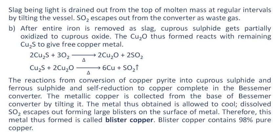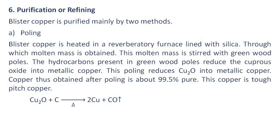Blister copper contains 98% pure copper. Purification or refining: Blister copper is purified mainly by two methods — poling and electro-refining. In the poling process, blister copper is heated in a reverberatory furnace lined with silica to obtain a molten mass. This molten mass is stirred with green wood poles. The hydrocarbons present in the green wood poles reduce the cuprous oxide into metallic copper. Copper obtained after poling is about 99.5% pure and is called tough pitch copper.